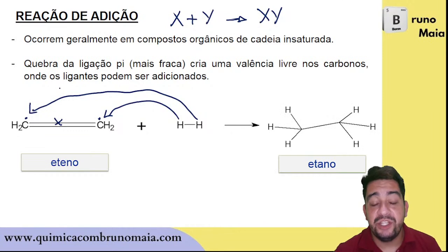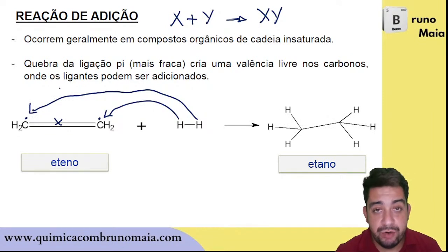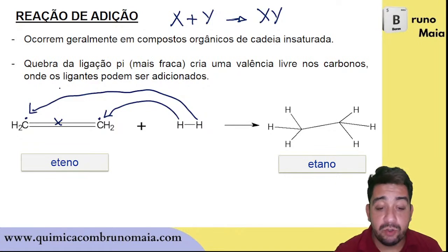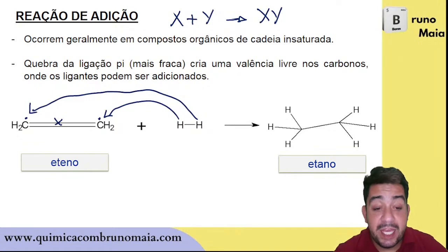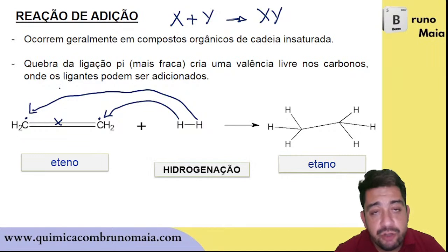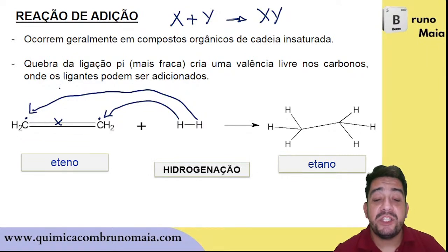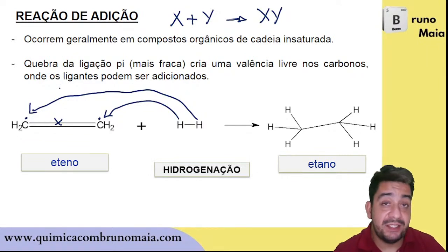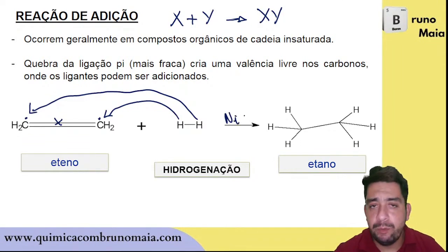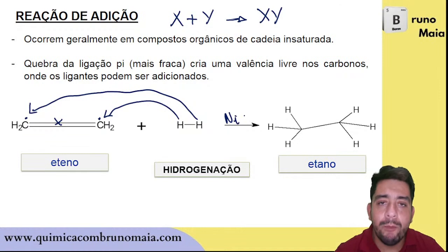So, from the addition of hydrogen to ethene, I can obtain ethane. This reaction, when I add hydrogen, is called catalytic hydrogenation, because in general we use a catalyst — for example, nickel, platinum, or cobalt.